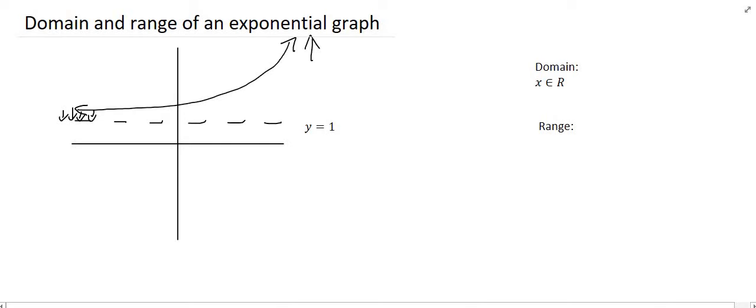So it goes from one all the way to infinity but one is not included. So we represent that as follows. There we go. So that's fairly simple, so we'll now try one or two examples.